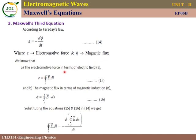In general, electromotive force in terms of the electric field is: ε = ∮E·dl (line integral of E). Magnetic flux in terms of magnetic induction is: Φ = ∬B·dS (surface integral of B). These are the expressions for EMF and flux respectively.